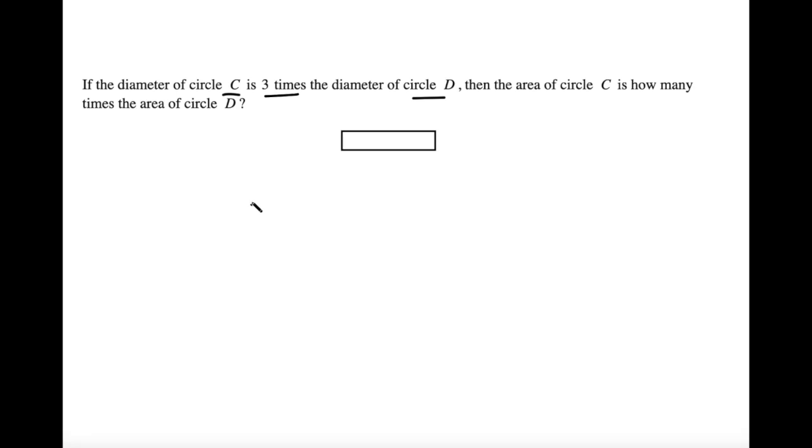So let's try this. Here's circle C, and here is circle D. And we're told that circle C's diameter, that is all the way across, is three times the distance of this. So let's pick numbers that are going to be easy to work with. Why don't we say that the diameter of circle D is two and the diameter of circle C is six.